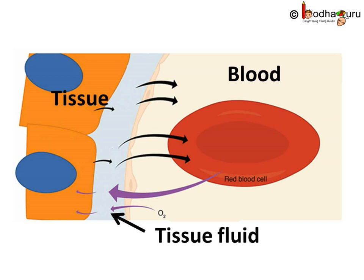Then, the tissue fluid leaves the cell and removes waste products. So, we see that it is not the blood that directly comes in contact with the tissues or cells for the transport of substances — it is actually done by the tissue fluid.